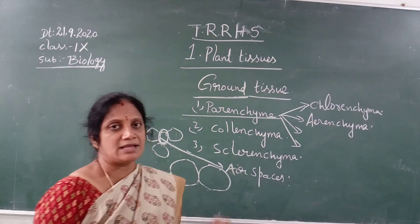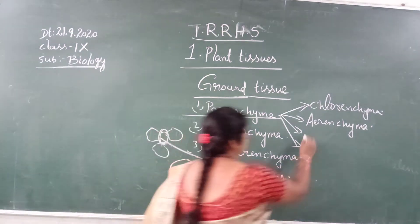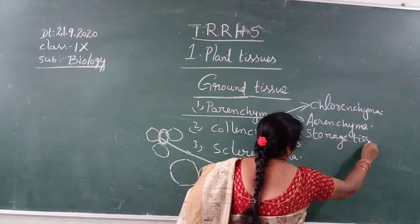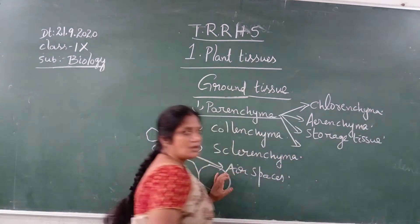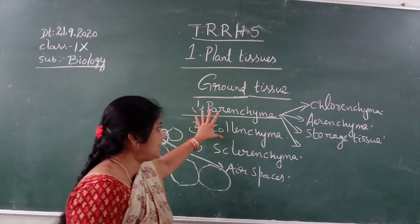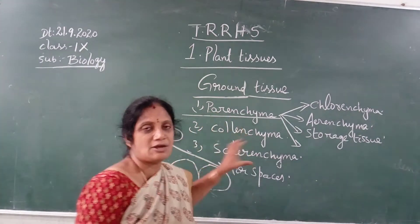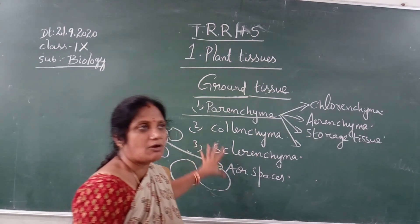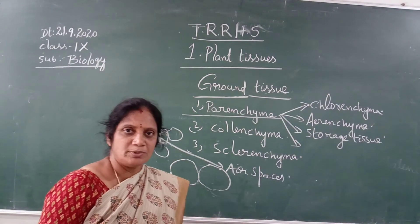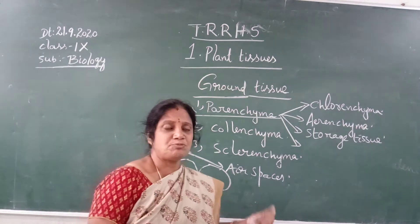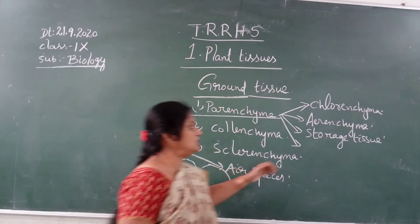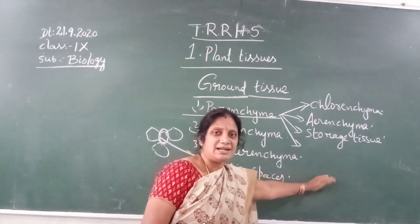The third type is called storage tissue. Parenchyma cells which store food are called as storage tissue. For example, fruits, tubers, roots, stems, potatoes, beetroot, and carrots all come under storage tissue, where food gets stored.